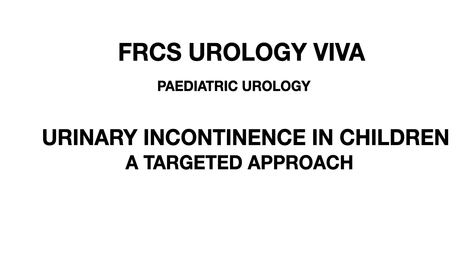'Can you tell me the dose of oxybutynin in children?' The dose is around 2.5 mg BD, and I can increase the dose further. As this child is around 10 years of age, I can give 5 mg BD. 'What are the side effects associated with anticholinergics?' These include dry eyes, dry mouth, and constipation. 'What is the efficacy?' It is effective in about two-thirds of cases.